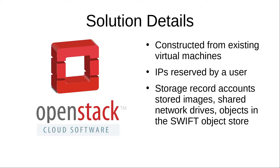For OpenStack, the approach needs to be a little different. Cloud usage records are constructed from existing virtual machines. However, public IPs are, in the case of OpenStack, considered in use whenever reserved by a user, regardless of whether they are actually attached to an existing virtual machine or not. OpenStack also offers more ways to consume storage independent of virtual machines. Aside from stored images, we will also want to account for shared network drives and objects in the Swift object store.